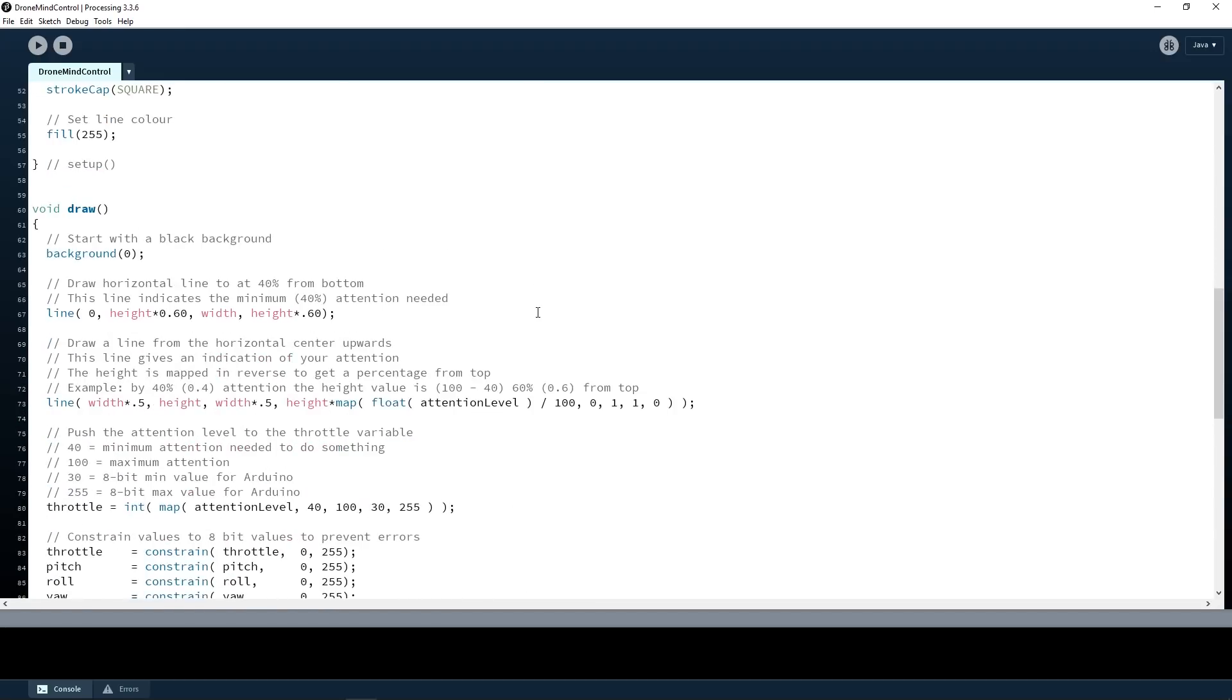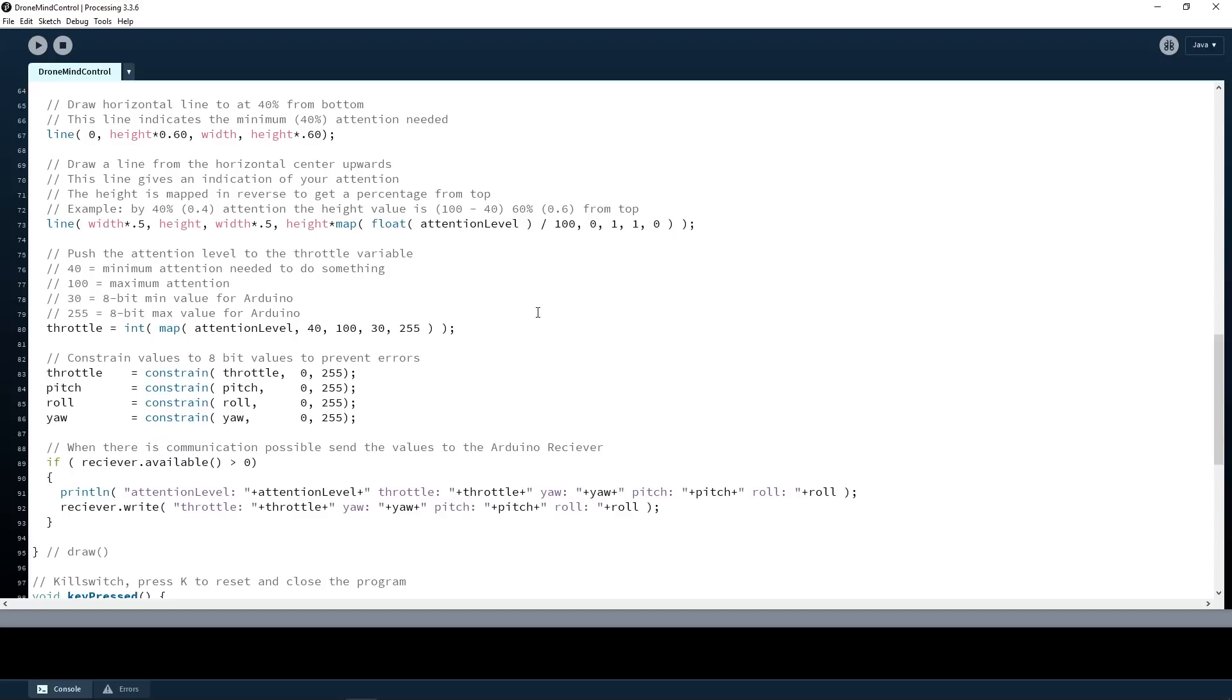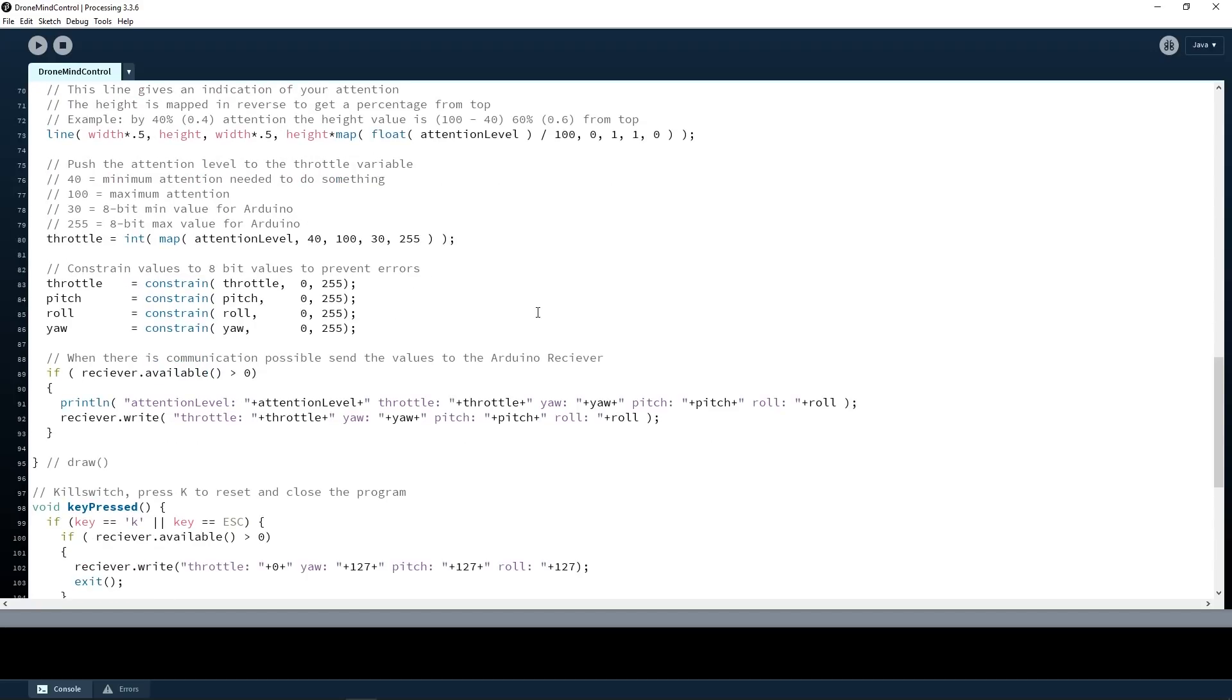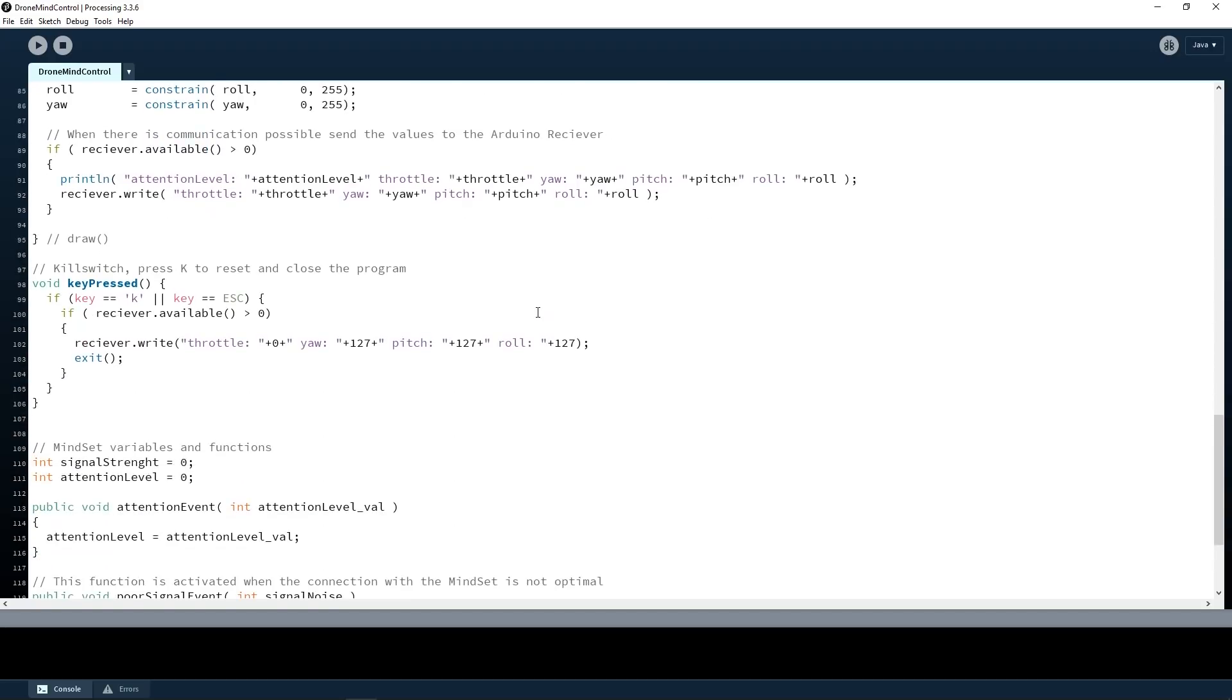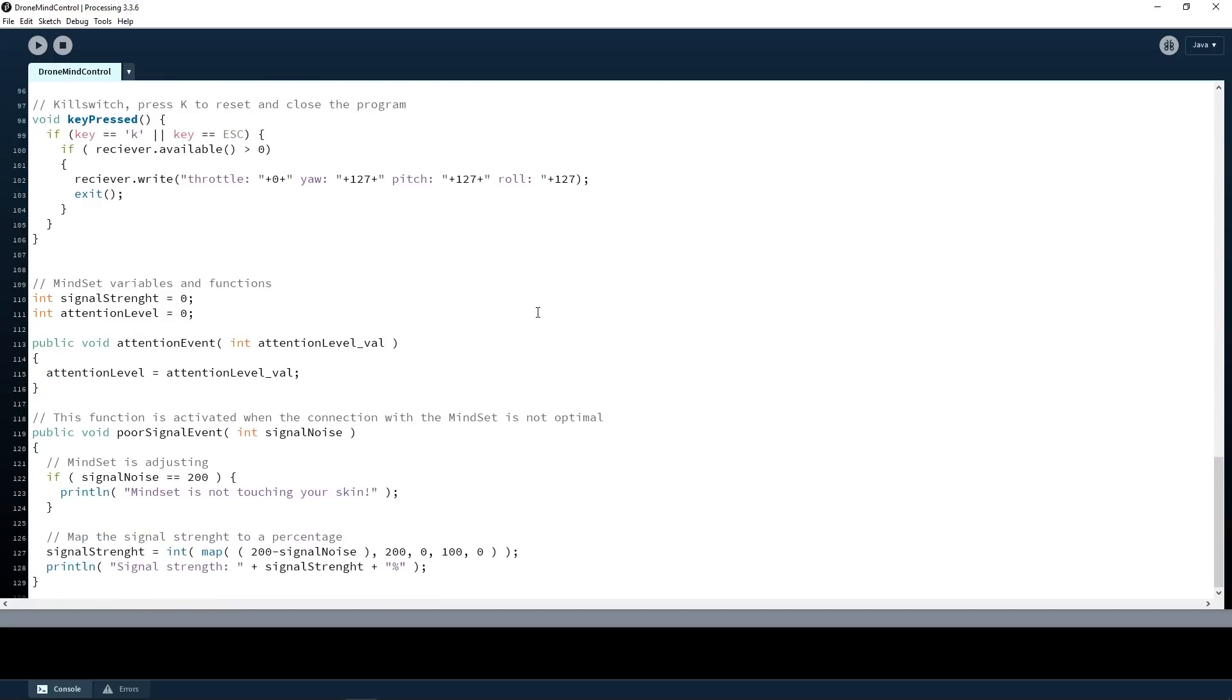The Mindset library will give you periodically an attention value between 0 and 100. This value gets mapped and will be sent to the Arduino to control the controller of the drone. Also there is a kill switch built in that terminates the whole program and sends the controller to 0 in case something goes wrong while experimenting. Press K to terminate the program.